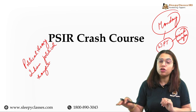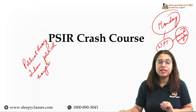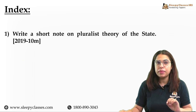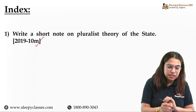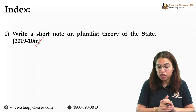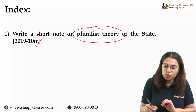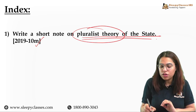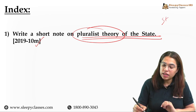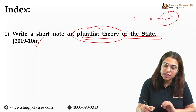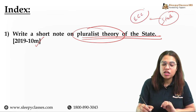Now without further ado, let's look at which questions we are dealing with. The first is a 2019 short question, a 10-marker, which is about writing a short note on the pluralistic theory of state. When we cover state, much like most other PSIR concepts, state is an essentially contested concept — Gallie's important statement — meaning there is no agreement on a fixed definition of what state means.